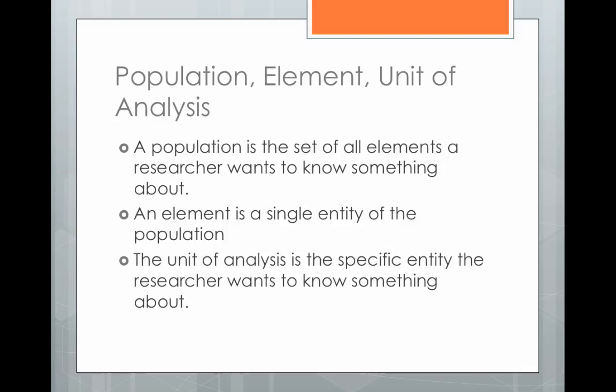This might be familiar to you from a research methods class if you took one, or it might be new. Let's start with the ideas of population, elements, and units of analysis. A population is the set of all of the elements that a researcher wants to know something about. An element is just a single entity of the population — the population is everyone or everything we want to know about, and the element is the individual piece within that population.